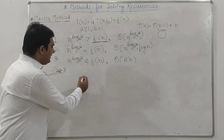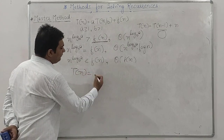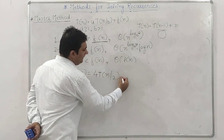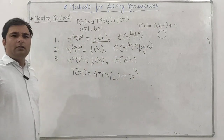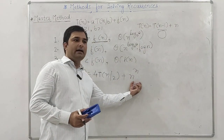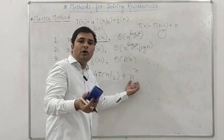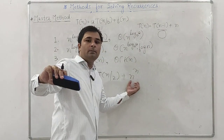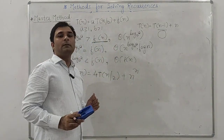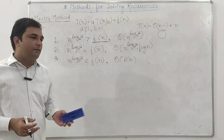Example with exponential f(n): T(n) = 4T(n/2) + n^3 * 2^n. Here n^(log_2(4)) = n^2. Since n^3 * 2^n is obviously greater than n^2 for n greater than 2, the running time is Theta(n^3 * 2^n). This is also an example of Case 3.